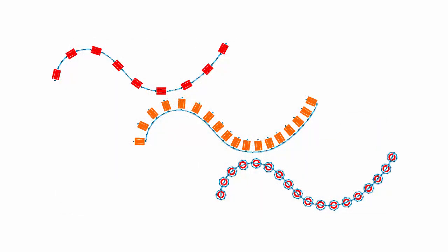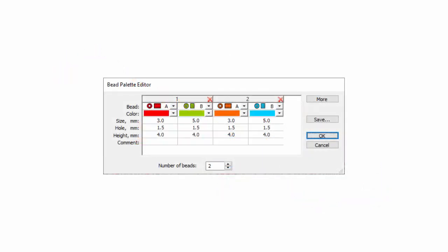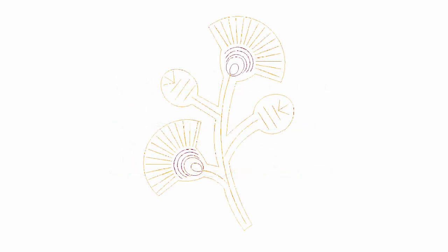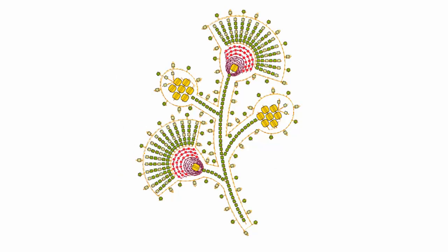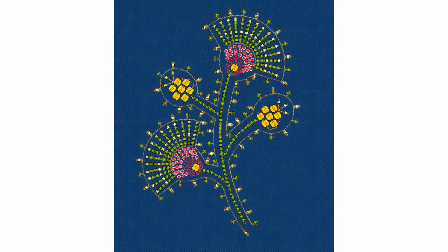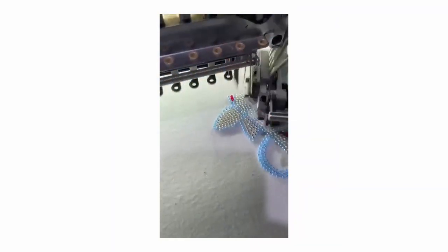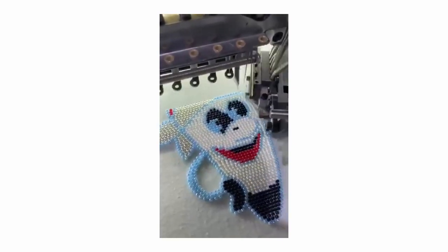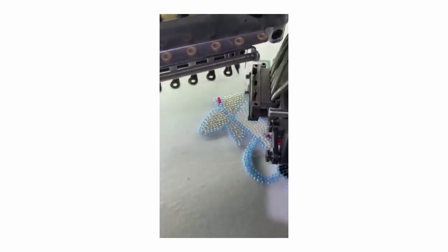Embroidery Studio supports digitising for beading devices. A library of beads of different sizes, shapes and colour is available, together with fixing stitches supporting classic, upright, flat and sideways beading. This video shows how to set up bead palettes and how to visualise bead designs in Embroidery Studio. See how to create single bead and multi-bead runs, as well as individual bead drops. Beading is a difficult skill to master. You need to experiment with your machine and fixing stitch and spacing settings to achieve reliable results.